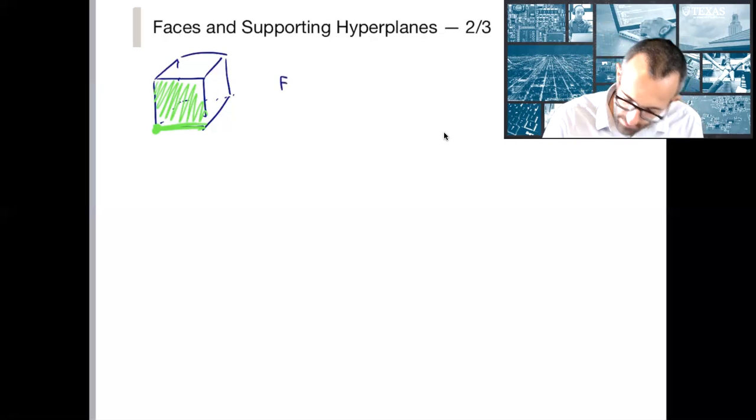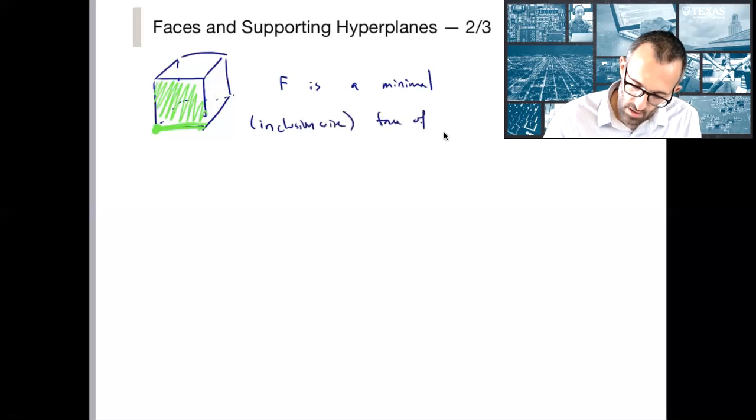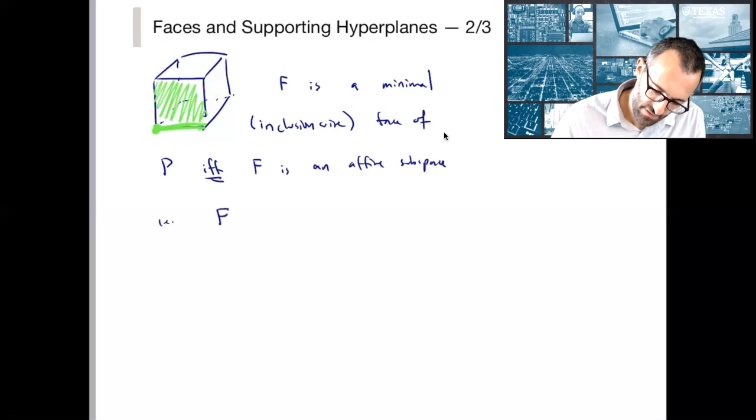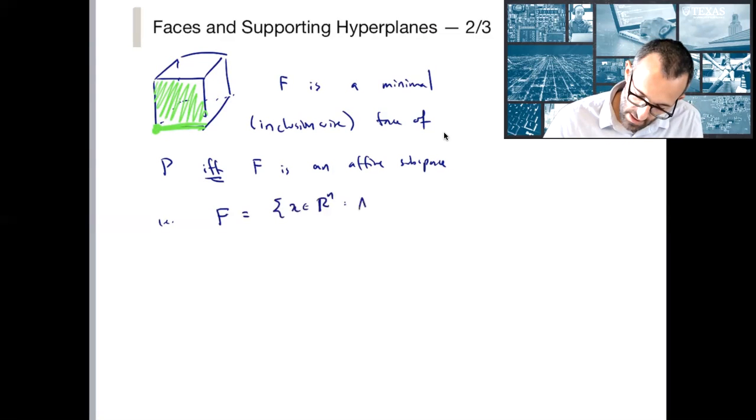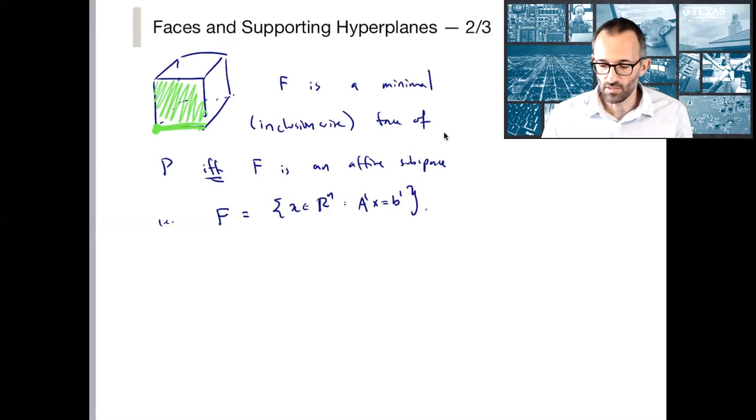So as by way of a definition, f is a minimal, again, inclusion wise face of p, if and only if f is an affine subspace. In other words, f is equal to x in R^n, not just x in p, of a prime x equals b prime. Let's not get caught up with this definition. If p is bounded, then this is just saying that a minimal face is just an extreme point. That's all it could be.